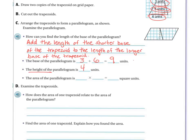So the area of the parallelogram is 9 units — where I added my two bases — times the height, which is 4. And 9 times 4 is 36 square units.